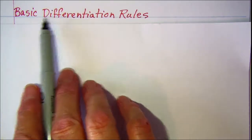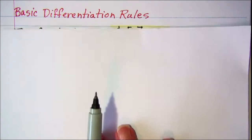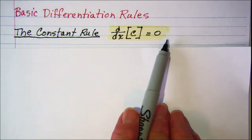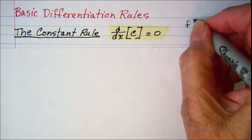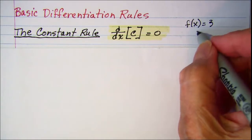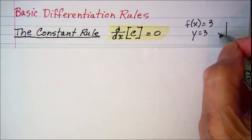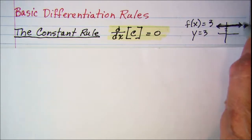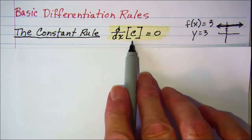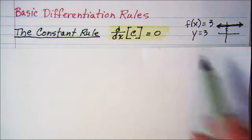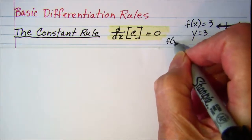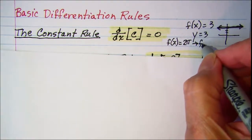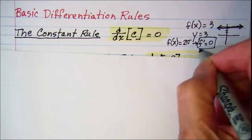In this video we'll be talking about basic differentiation rules. Our first rule is the constant rule, which says that the derivative of a constant is zero. So if you think about f(x) = 3, this is y = 3, which is a horizontal line through 3, and the slope of that line is zero. So the derivative of any constant is always zero — for example, the derivative of f(x) = 2π would be f′ = 0.